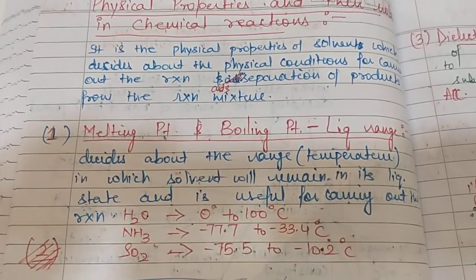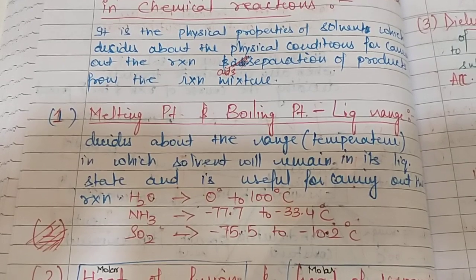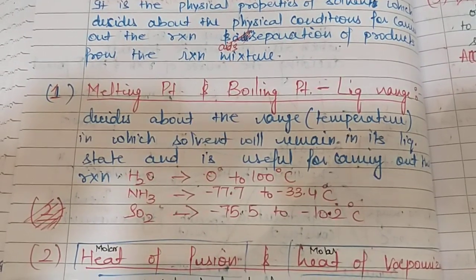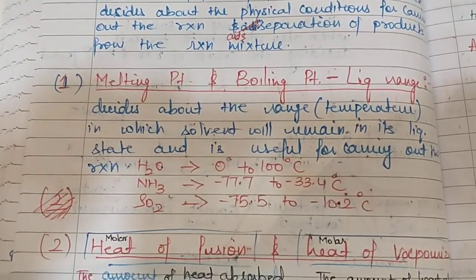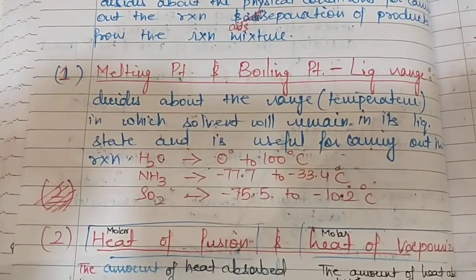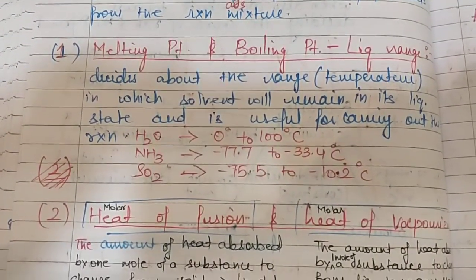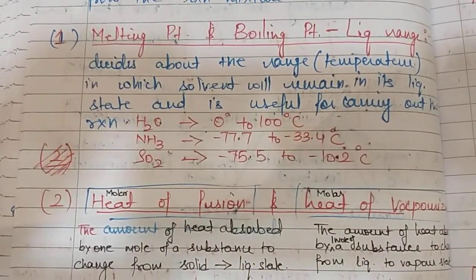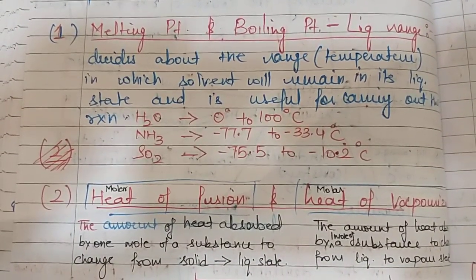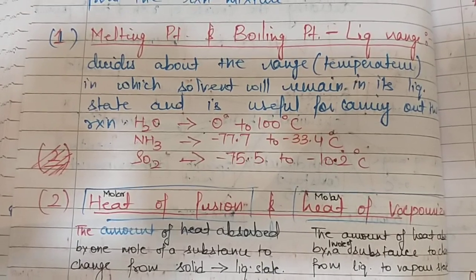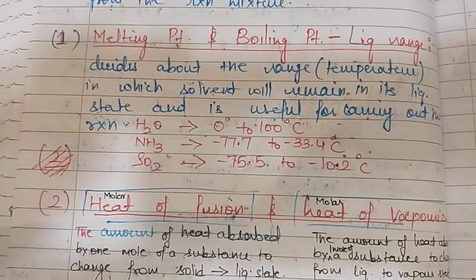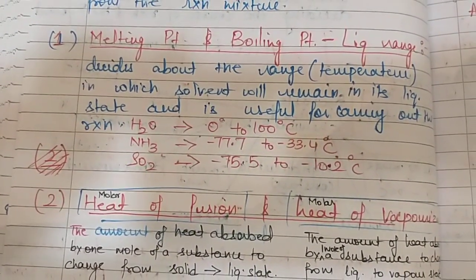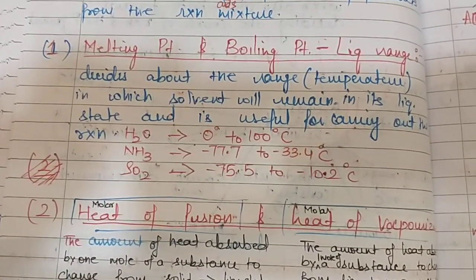The first physical property is melting point and boiling point. Knowledge of melting and boiling points tells us the liquid range of a solvent — that is, the temperature range over which it remains liquid. For water, the liquid range is 0 to 100 degrees Celsius. For ammonia, it is minus 77.7 to minus 33.4 degrees Celsius. For liquid SO2, it is minus 75.5 to minus 10.2 degrees Celsius. So the liquid ranges of ammonia and SO2 are much lower than water.